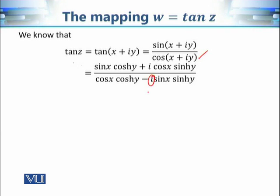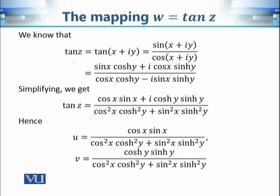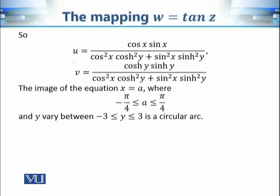The imaginary unit i in the denominator is the troublemaker, so we multiply and divide the expression by the conjugate of the denominator. From the resulting expression it is straightforward to identify u and v, and we can write down their values explicitly.